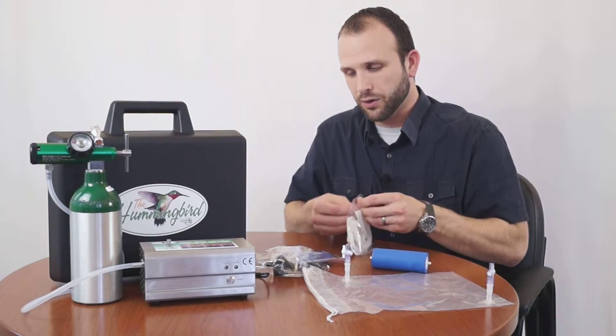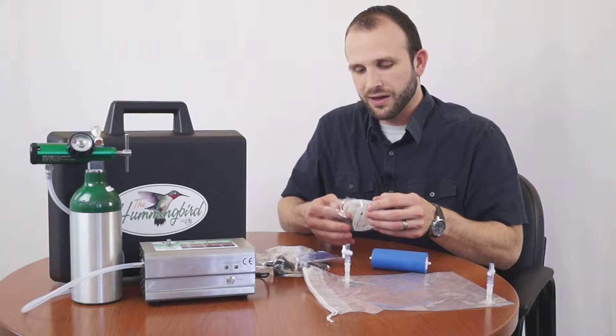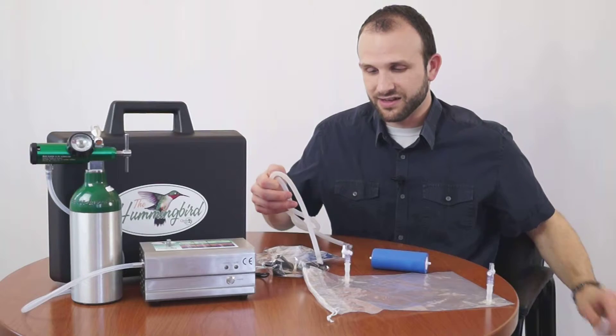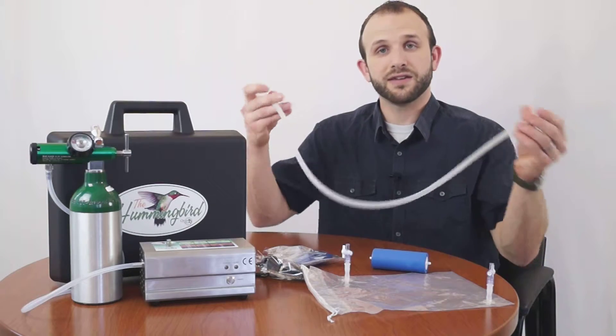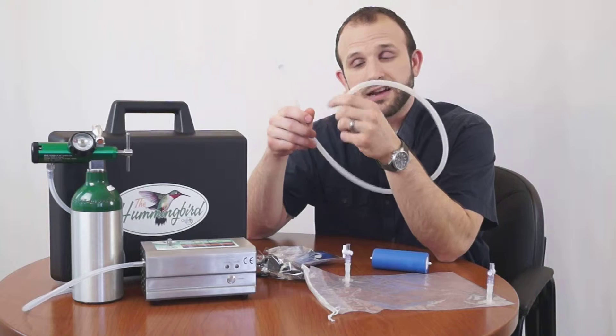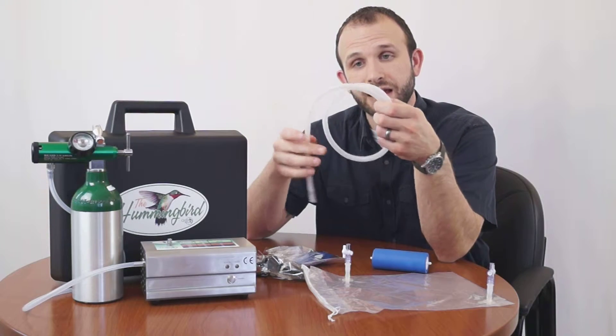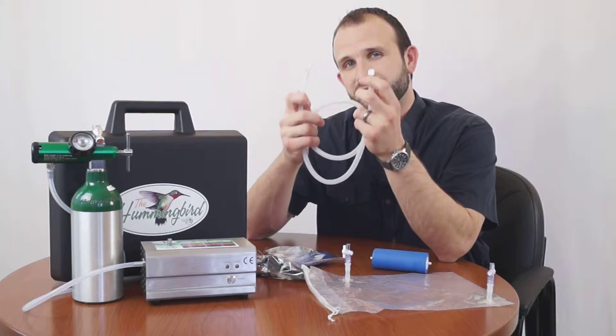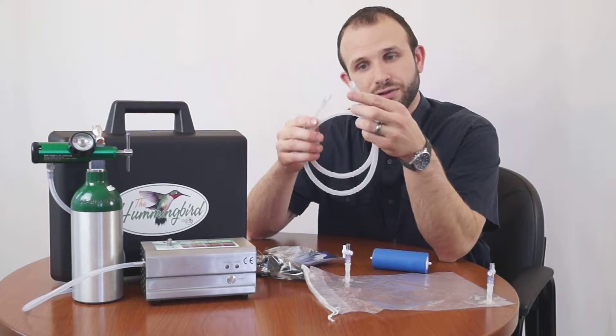We've got an ozone-resistant, highly ozone-resistant silicone tube, and this is actually used to connect to the generator. We connect the generator to the bag, and that's how we fill our bag with ozone. We've just got two simple luer lock connections on either side of that.